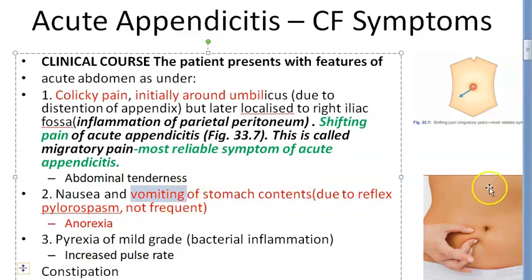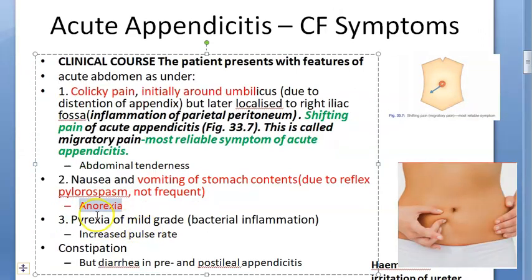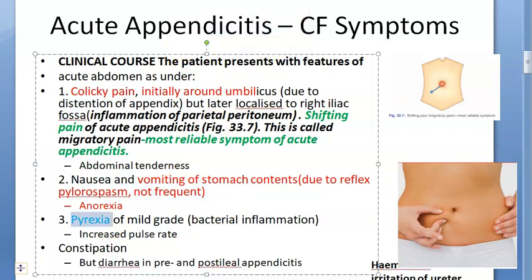What type of vomiting occurs? Stomach contents are vomited due to reflex pylorospasm of the pyloric sphincter. This is not frequent — not like an intestinal obstruction. And since vomiting is present, the patient can also have anorexia. Now the third thing is pyrexia. So to summarize, acute appendicitis has only three key symptoms: colicky pain, nausea and vomiting, and pyrexia.